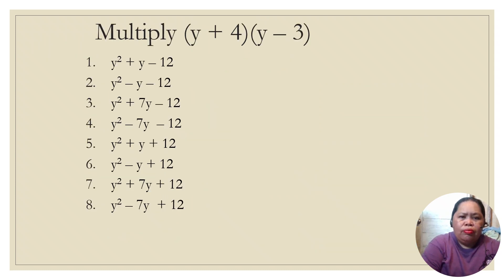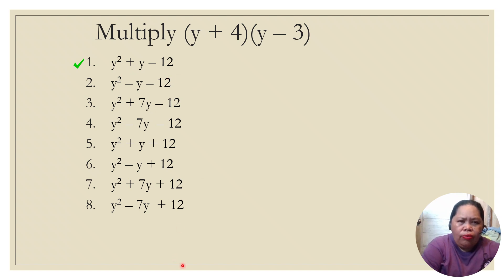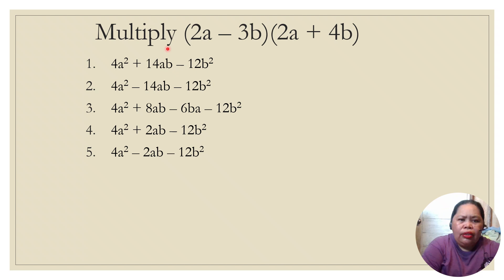Next, multiply (y + 4) times (y − 3). The final answer is y squared + y − 12. Here's how: y times y is y squared, then 4y minus 3y is y, and 4 times −3 is −12.